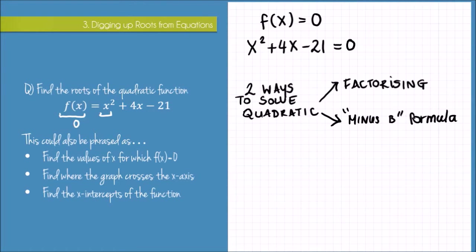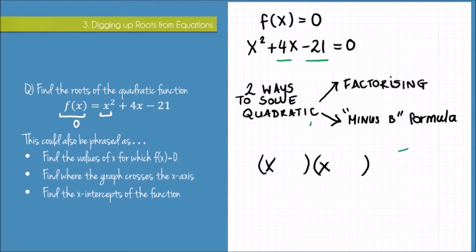I want to get my factors, which means I'm looking for two factors of -21 that add to give me +4. They will be +7 and -3. You can check: if you multiply them together they give you -21, and they add to give you +4.